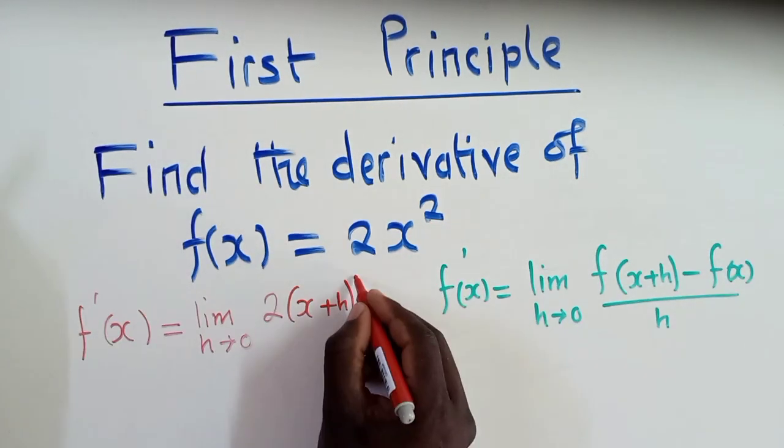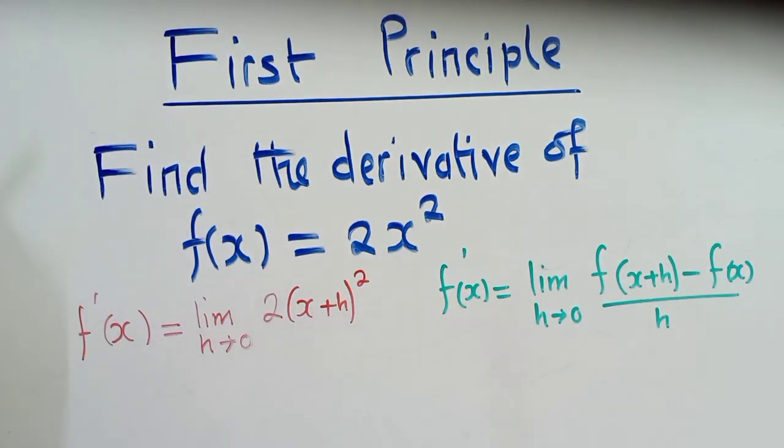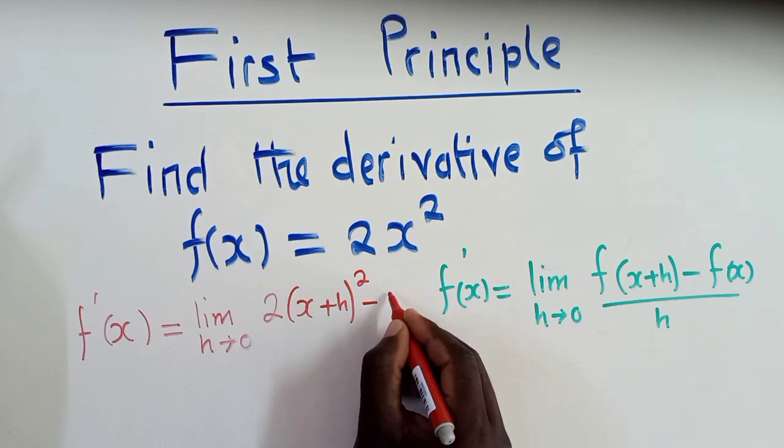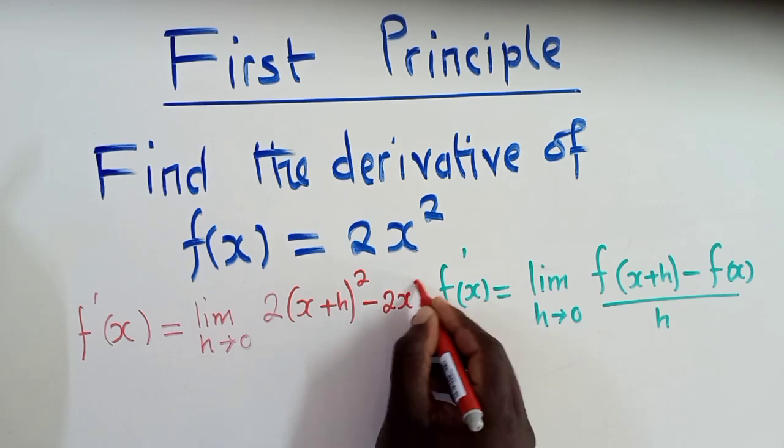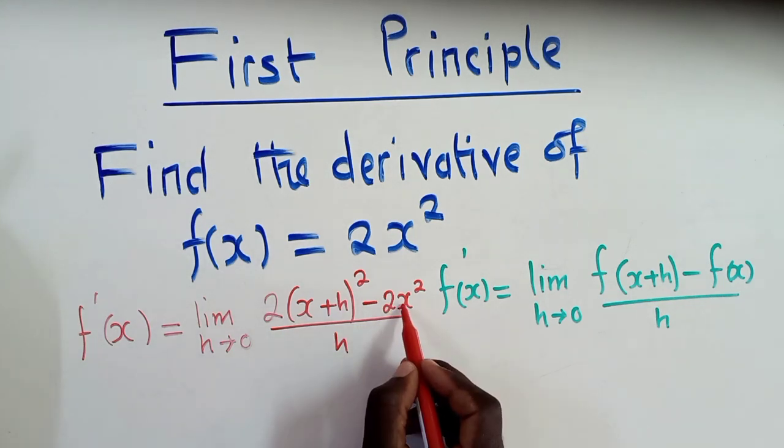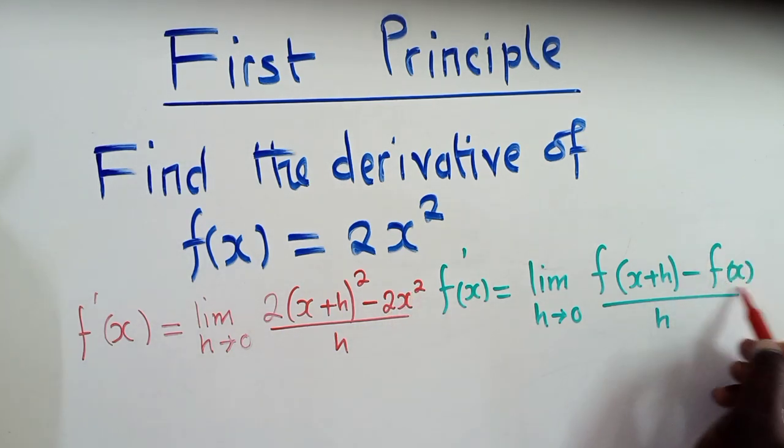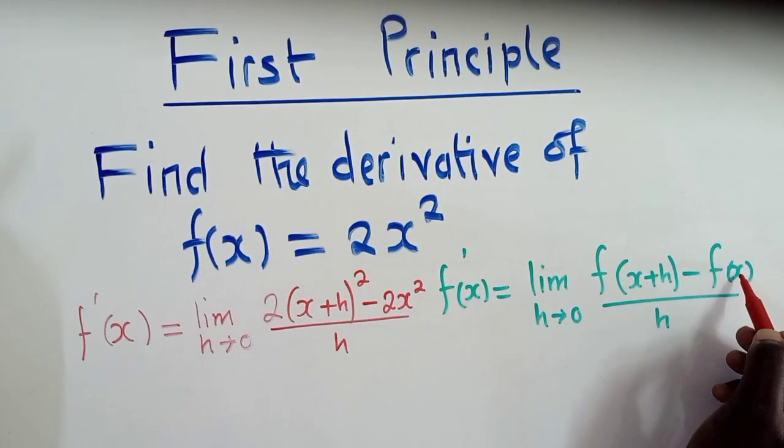Now, this power 2 will come right here. Minus 2x² and over h. So this 2x² will be where f(x) is.